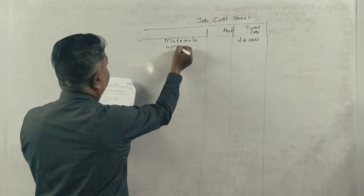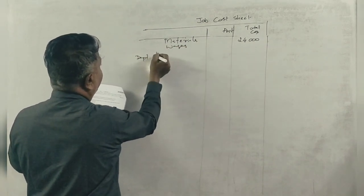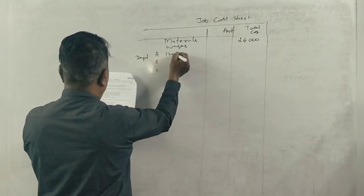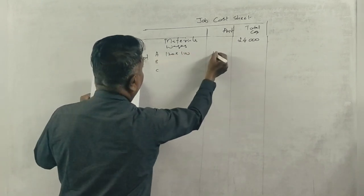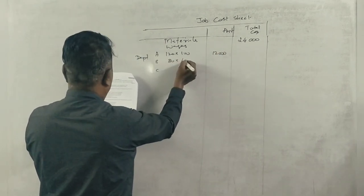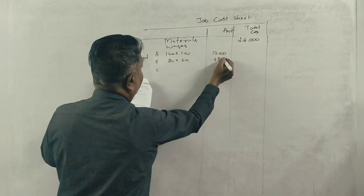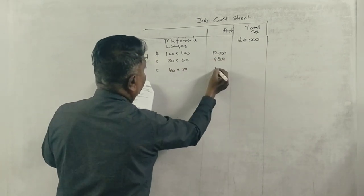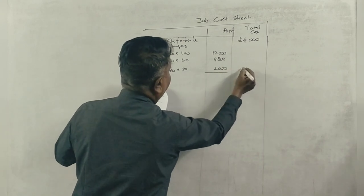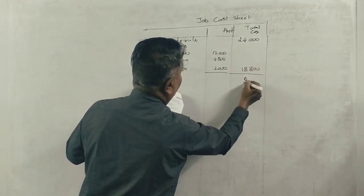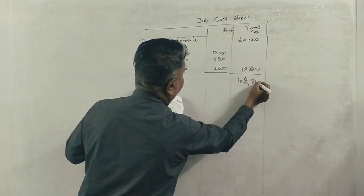Wages for departments A, B and C: 120 hours into 100 is ₹12,000. 80 hours into 60 is ₹4,800. 40 into 50 is ₹2,000. So total wages is ₹18,800. And this comes to ₹42,800.